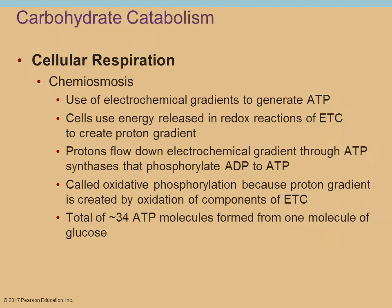Chemiosmosis is that last step where ATP is generated. The hydrogen ions flow through ATP synthase because the previous electron transport chain step pumped them out of the cell — they want to flow back in. You produce this gradient and generate the majority of your ATP molecules from the electron transport chain.